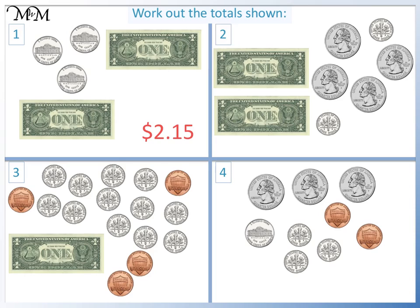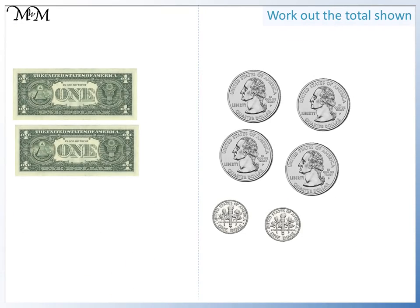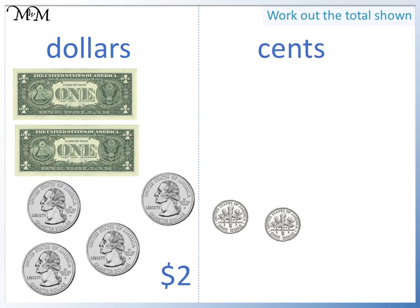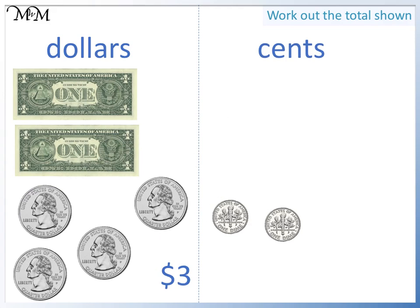Question two: we have two dollars, and we have four quarters, which make another dollar. Looking at the cents again, we have two dimes, which make twenty cents. So we have three dollars and twenty cents, which we write as three dollars twenty.